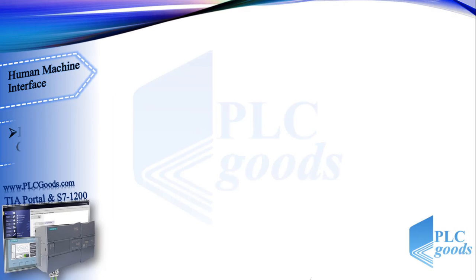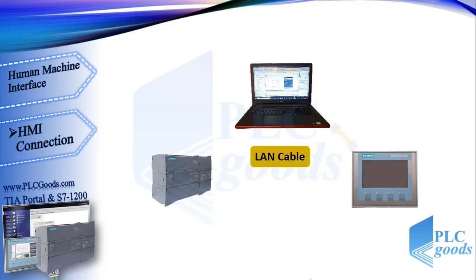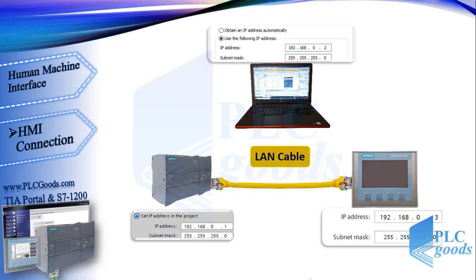Now let's see how to link the PLC with HMI. We have seen how a Siemens S7-1200 CPU connects to a computer with a LAN cable. Similarly, we can connect this HMI to a computer. Also with a LAN cable, the PLC and HMI can connect together. The base point in a network is IP addresses, which must be different for each device.